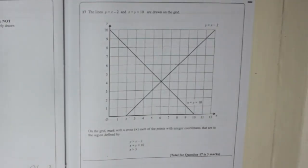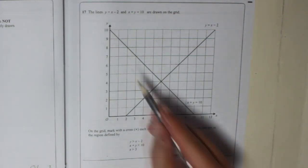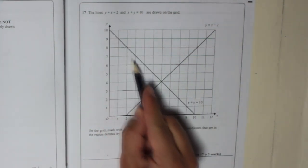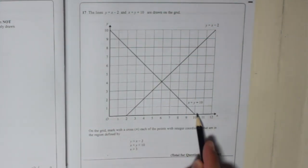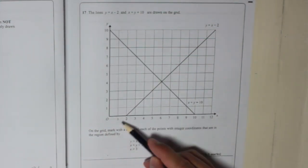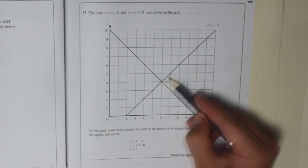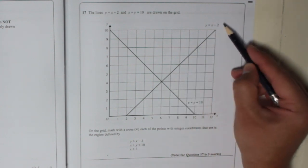Question 17. The lines y equals x minus 2 and x plus y equals 10 are drawn on the grid. Here is x plus y equals 10, and here is y equals x minus 2.